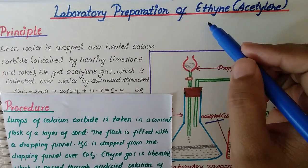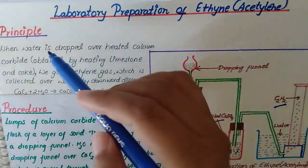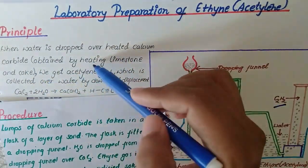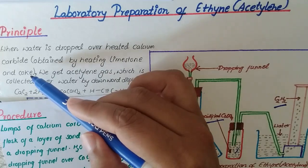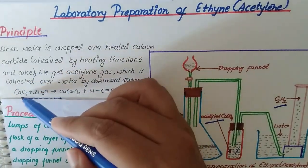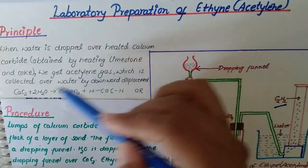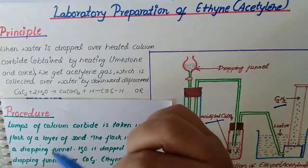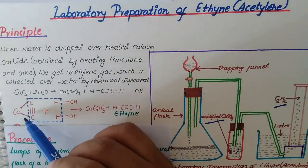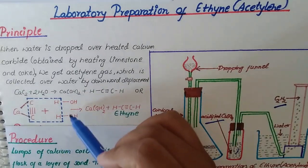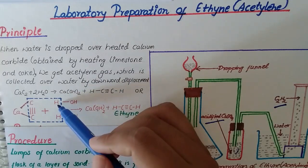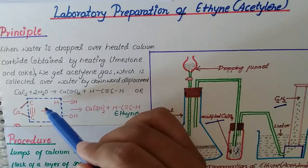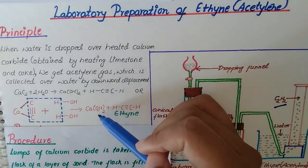The principle involved in this preparation is: when water is dropped over calcium carbide, we get acetylene gas. Calcium carbide is obtained by heating limestone and coke, and its molecular formula is CaC₂. When calcium carbide reacts with water, it gives ethyne gas plus calcium hydroxide. The carbon bonds with hydrogen of each water molecule to form ethyne gas plus calcium hydroxide.